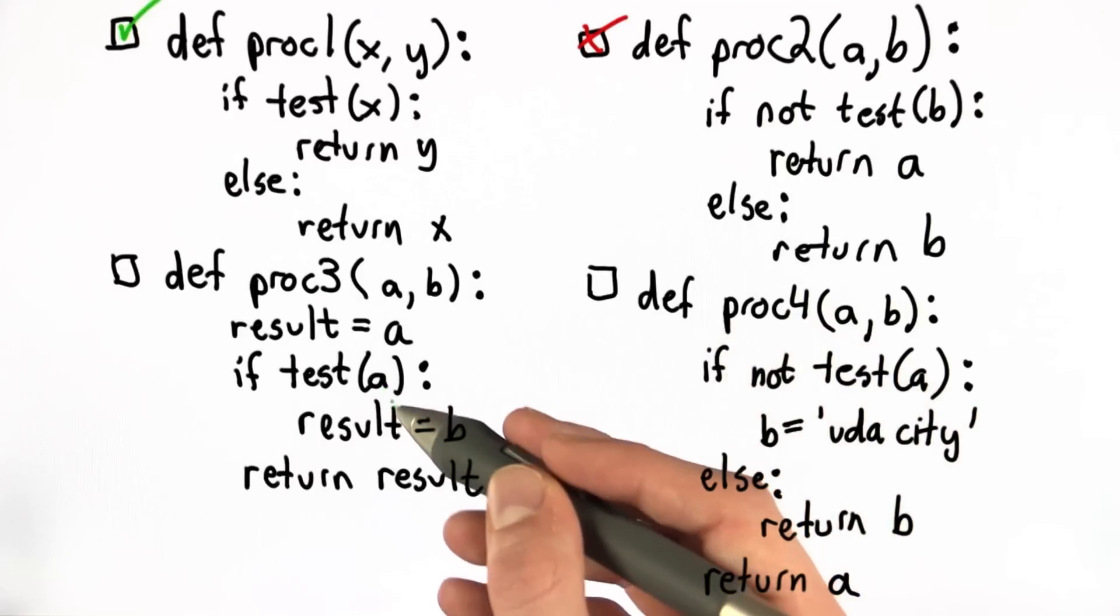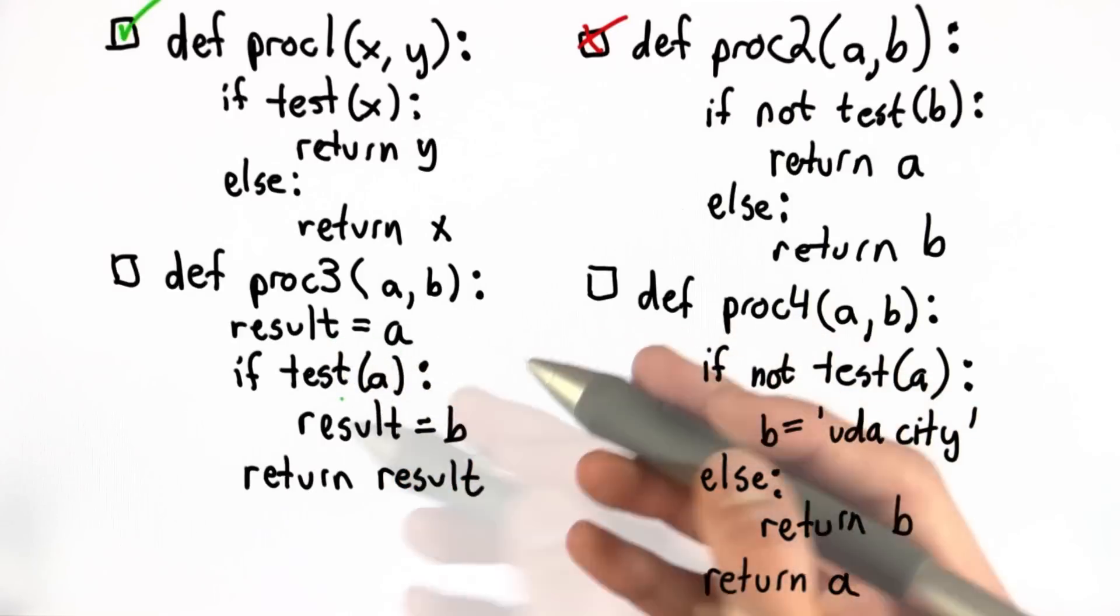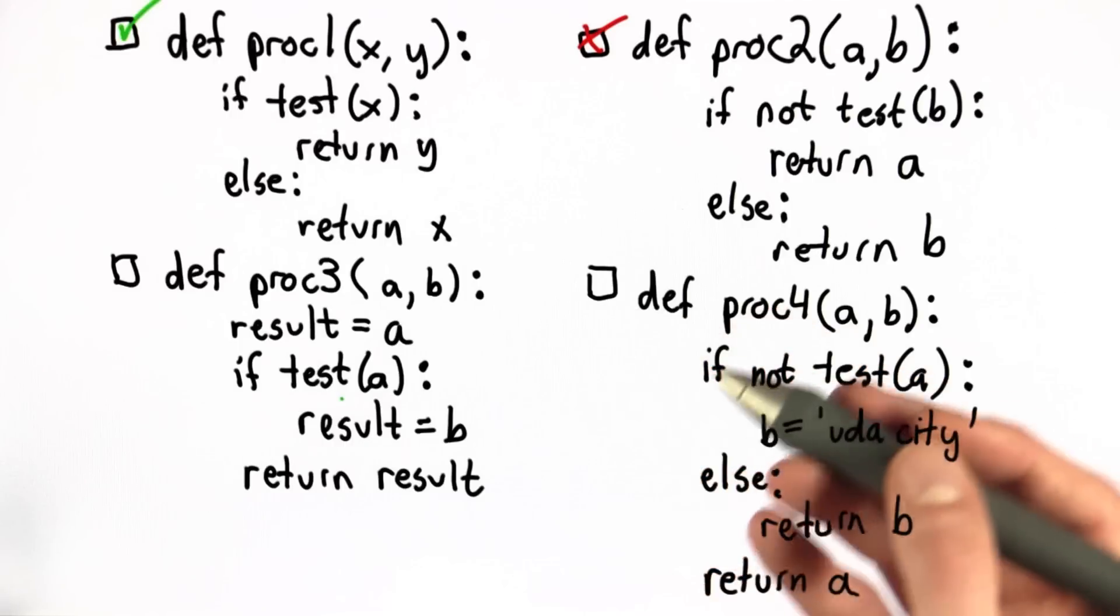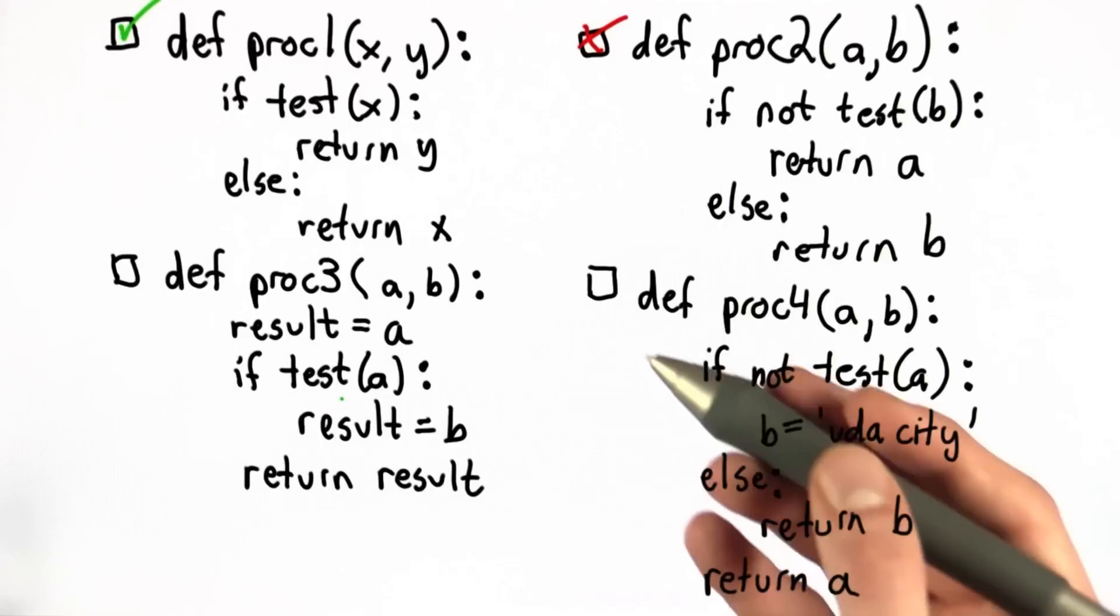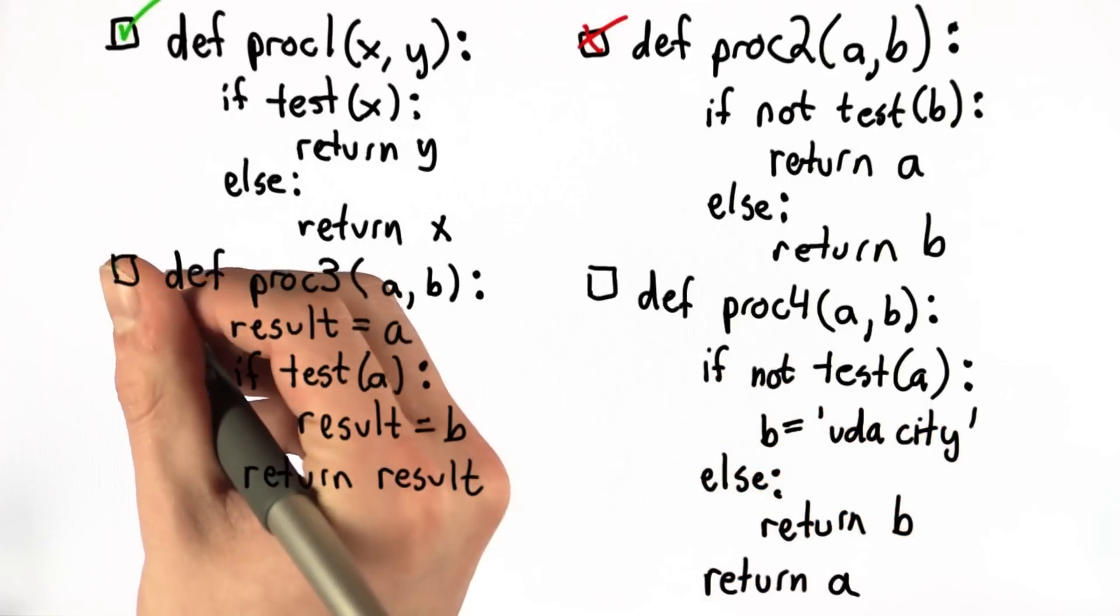If test a is false, we simply return result, which was set at the beginning to a. So the overall functionality is that if test a is true, we return a. This matches with the original function definition. So this is equivalent to proc.